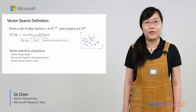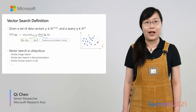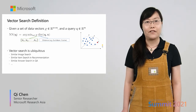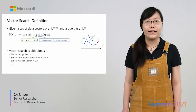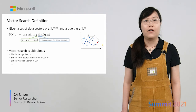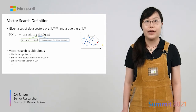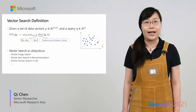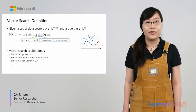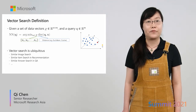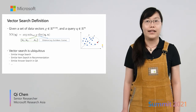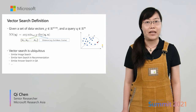Let me give you a brief introduction of vector search. Given a dataset X containing n vectors with m-dimensional features and a query vector q, the goal of vector search is to find a vector x from the dataset — called the nearest neighbor — such that x has the minimal distance with the query vector q in the whole dataset. Similarly, we can define the k nearest neighbor search.